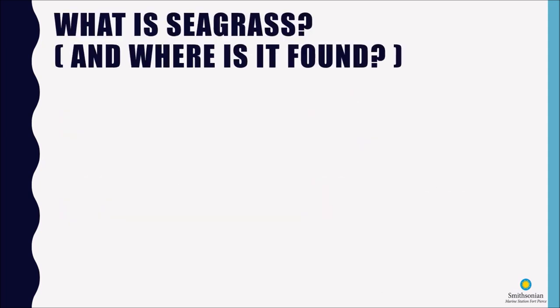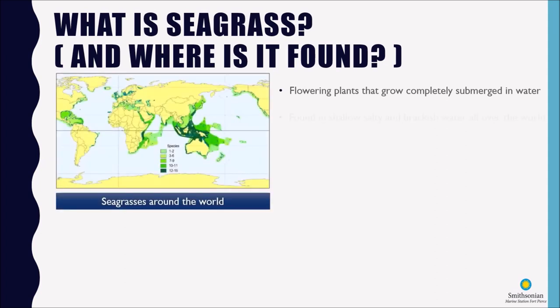So let's talk about seagrass. What is seagrass and where is it found? Seagrass is a flowering plant that grows completely submerged in water, and it's found in shallow, salty, and brackish water all over the world, from the tropics to the Arctic. Brackish water is water that's not quite as salty as ocean water but isn't fresh water either — it's kind of in between. This map from the Smithsonian Institution shows in green where seagrasses are found around the world, and the species key shows approximately how many species are found in each of those areas.